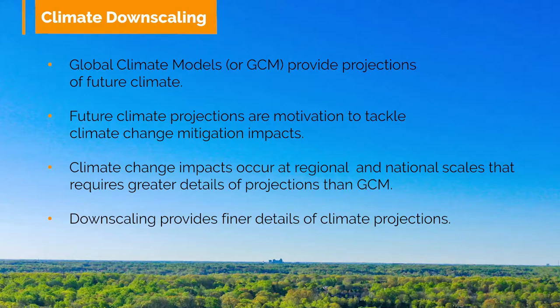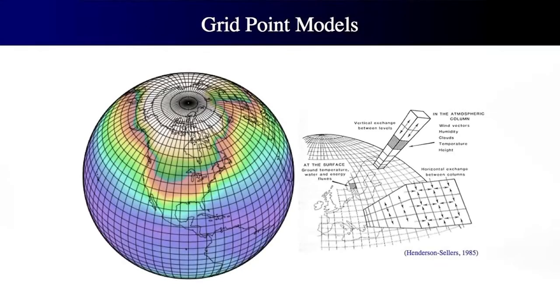GCMs provide us with projections of how the climate of the Earth may change in the future and are the main motivation for the international community to make decisions on climate change mitigation. However, the impacts of a changing climate and the adaptation strategies required will tend to occur on more regional and national scales, requiring much greater detail and a more accurate representation of localized climate information.